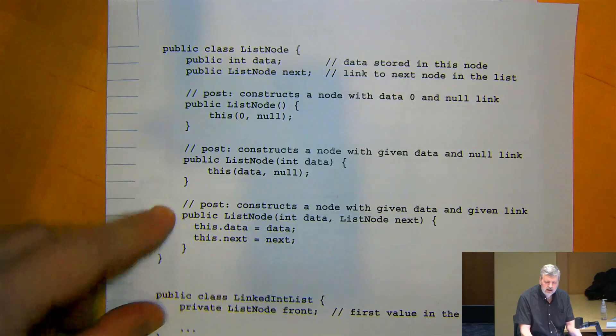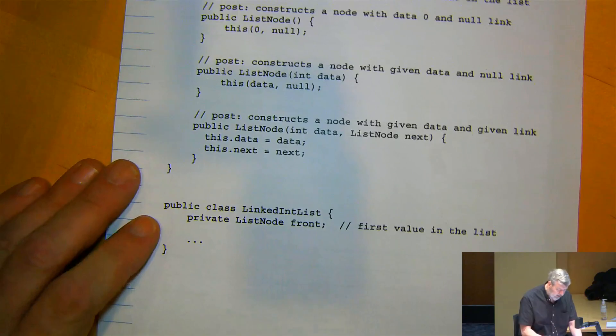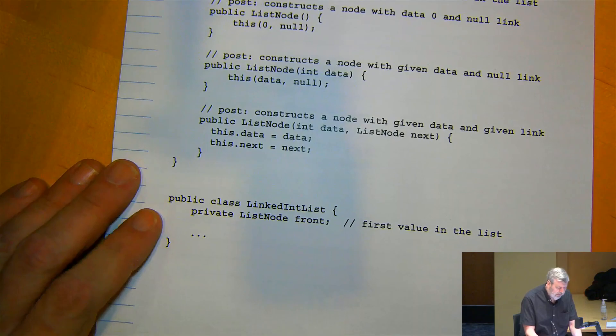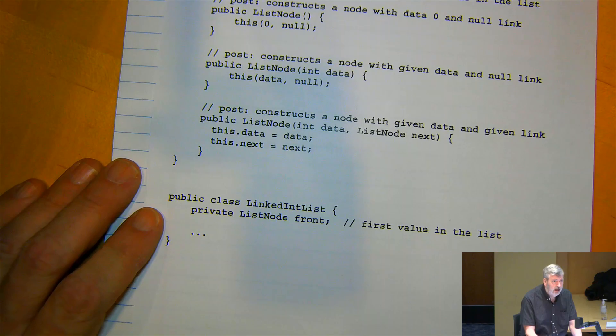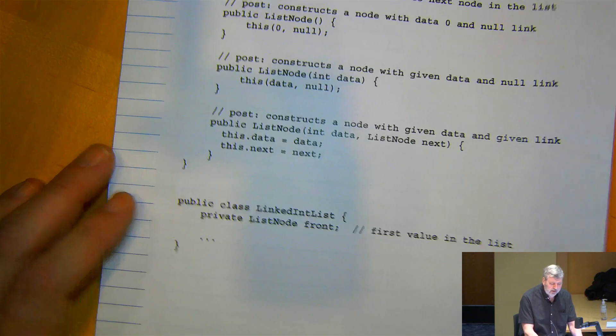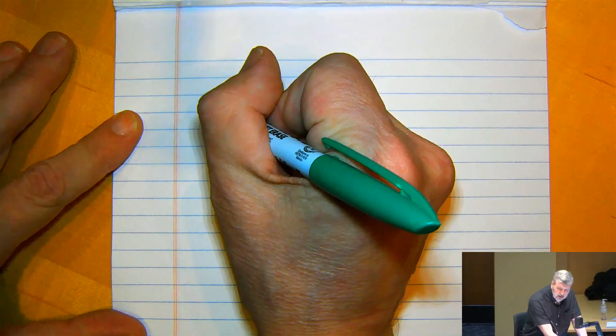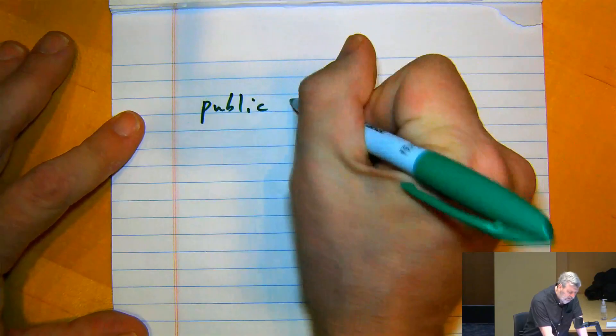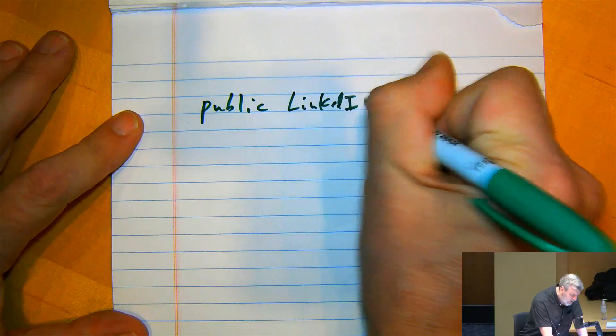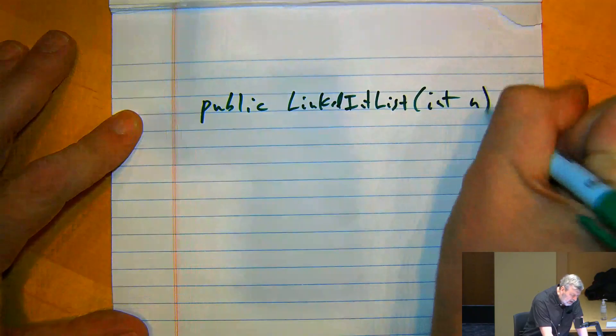We're working with the ListNode class that has public fields and some constructors, and our LinkedList class has the one field called front. I want to give you an example of a constructor that does some non-trivial amount of work. In your homework assignment you're going to be writing a constructor that does a fair amount, and in the past I've had students who are thrown by that because all the constructor examples we'd shown were doing very simple things like just setting a field.